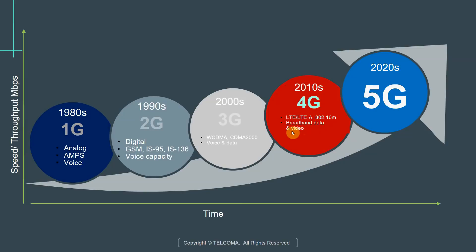We saw the emergence of very data-intensive applications, and as a result there was a need for a network technology that could cater to the demands of such high consumption of data. There was also a substantial increase in video traffic — for example, YouTube took off, you had Hulu and other streaming services, which if delivered on 3G would not give a good user experience.